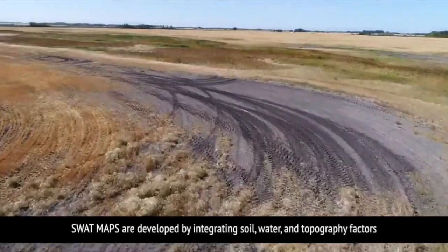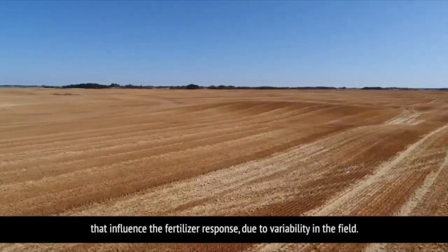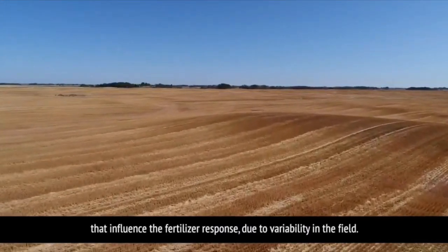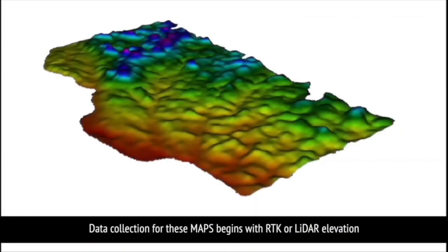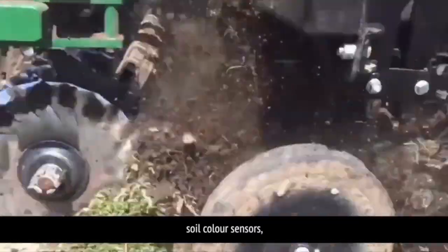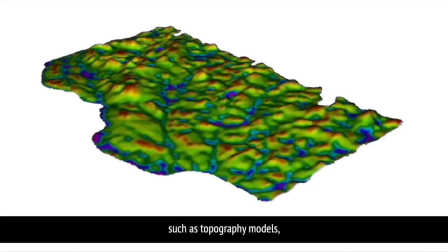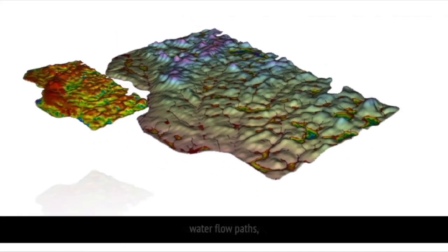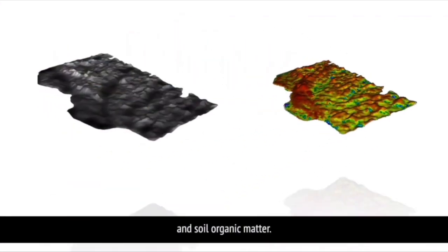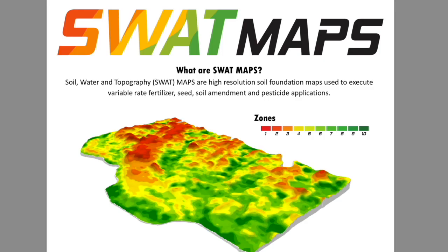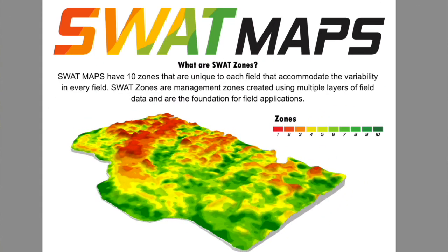Three very key pillars of crop production. This model was developed in western Canada but has been applied to many different agronomy programs basically across the world. The concept is that it breaks the field into 10 particular management zones that go from 1 to 10, with 1 and 2 being the drier areas and 9 and 10 being the damper, water-collecting areas. Every particular field that has a SWAT map developed for it has these 1-to-10 zones that exist in the map.